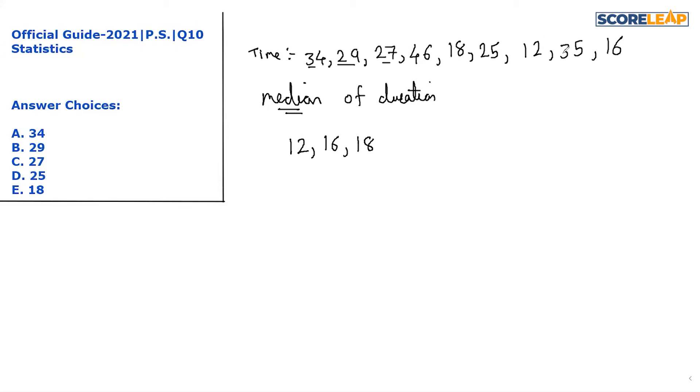29, and 34, 35, and 46. So this is the ascending order of the duration of power failures.